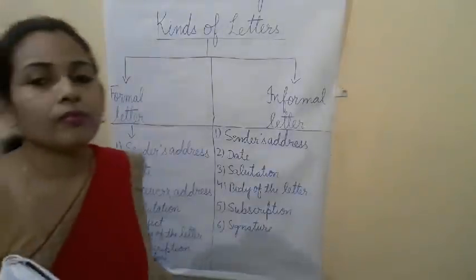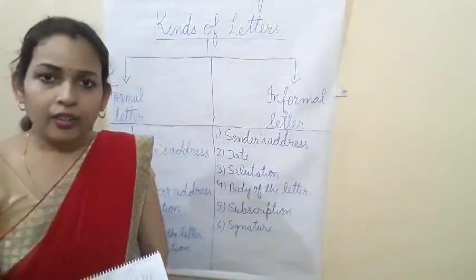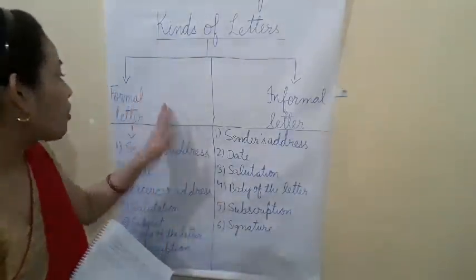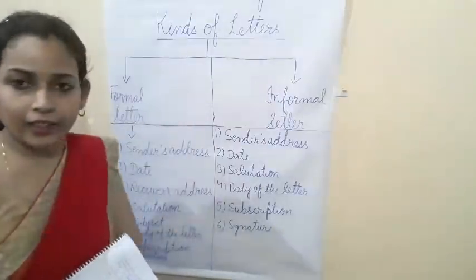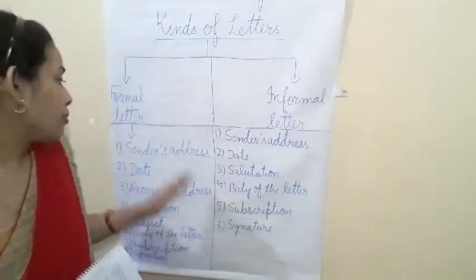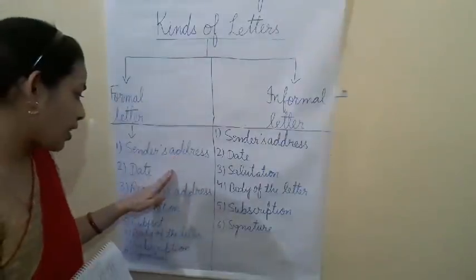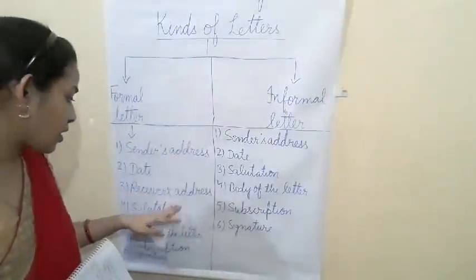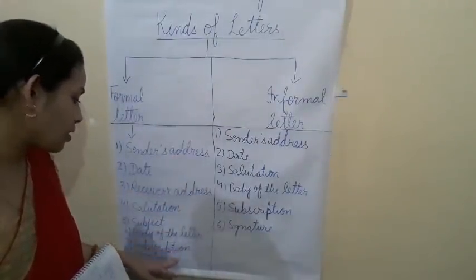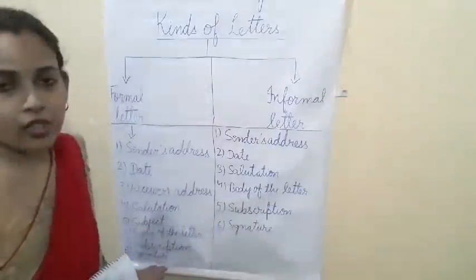This is the pattern we follow in a formal letter. We follow: sender's address, date, receiver's address, salutation, subject, body of the letter, subscription, and signature.